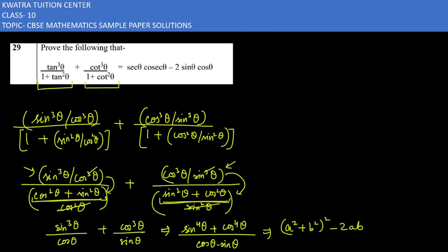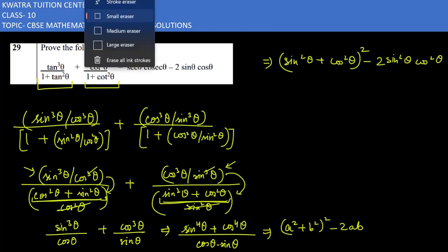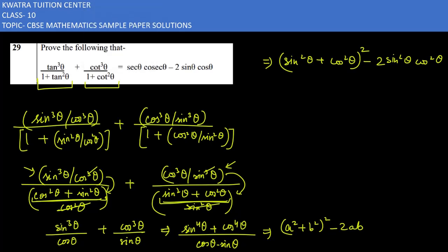So we simplify the numerator: sin⁴θ + cos⁴θ becomes (sin²θ + cos²θ)² - 2sin²θcos²θ. This is the simplified form of the numerator, and the denominator remains cosθ·sinθ.